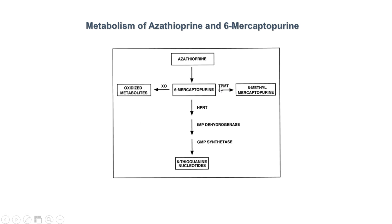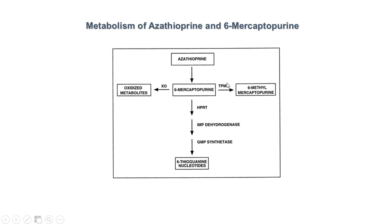Likewise, thiopurine methyltransferase is a primary example of pharmacogenetics. Some people will have decreased activity of this enzyme, and therefore we will also get a shunting of 6-mercaptopurine down the main pathway. By shunting 6-mercaptopurine down this main pathway, we will have increased levels of thioguanine nucleotides and therefore increased immune suppression and increased adverse drug reactions, if the doctor doesn't account for allopurinol use or decreased thiopurine methyltransferase activity.